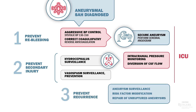The ultimate goal of aneurysmal subarachnoid hemorrhage management is to prevent recurrence. That involves surveillance for future aneurysms, risk factor modification, and repair of unruptured aneurysms where appropriate.